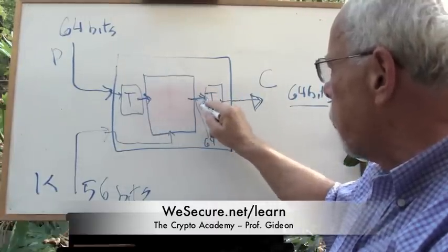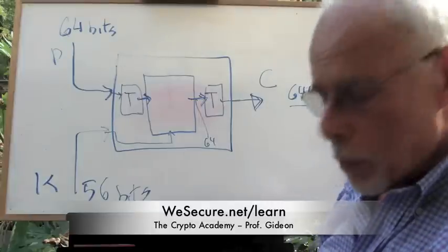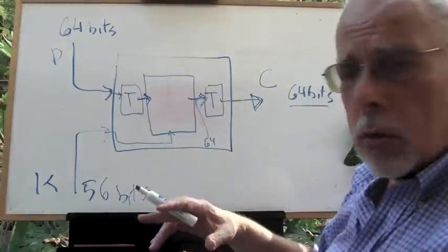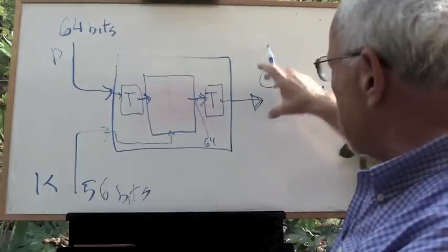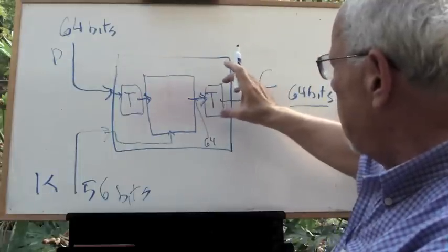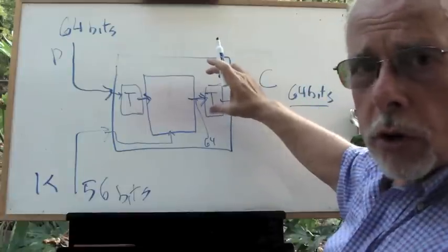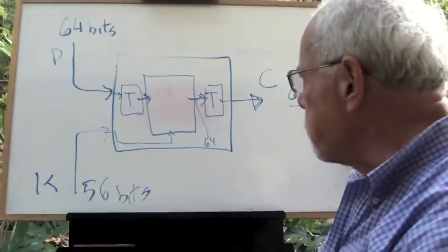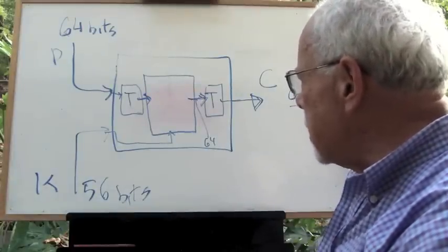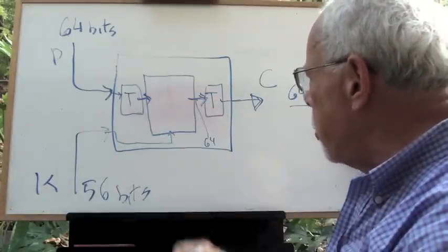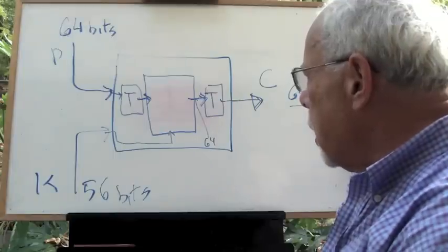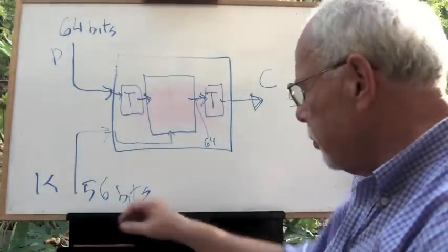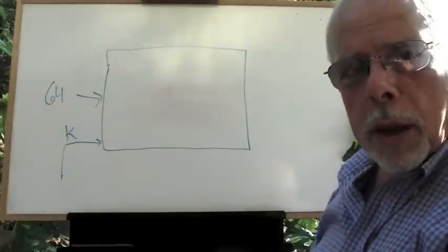We will see later that when we talk about decryption, we do the same thing in the opposite direction. The feed comes from here, this transposition module is first, this is last, and this also works in reverse. Now let's ask ourselves what happens if we open this box, this sub-box.